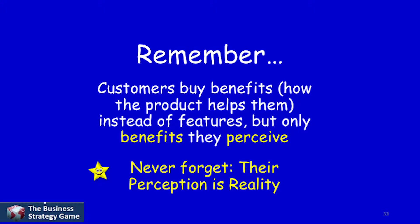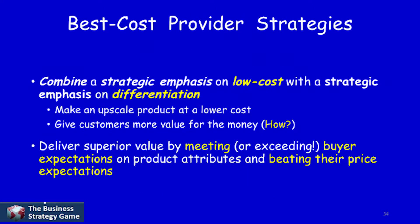Not only do people only buy benefits, they only buy the benefits they perceive. So again, it's exceedingly important that you understand that the customer's perception is the true reality. So with your Best Cost Provider strategy, what you're trying to do is combine a strategic emphasis on low cost along with a strategic emphasis on differentiation. What this means is to try and give an upscale product at a lower cost and give the customer more value for their money.